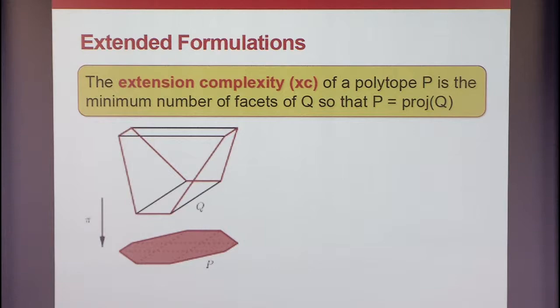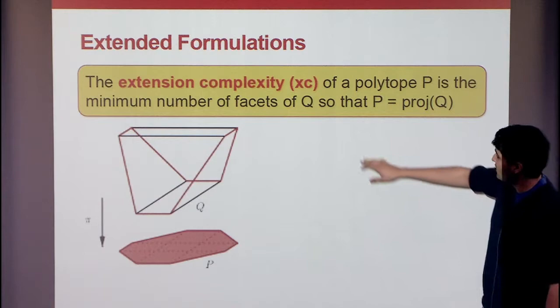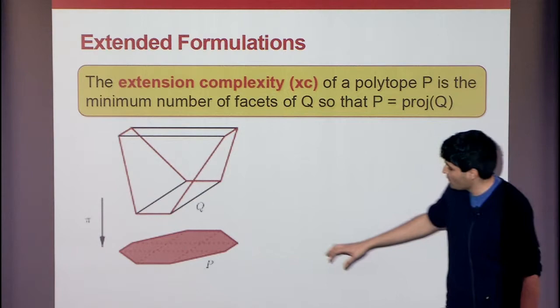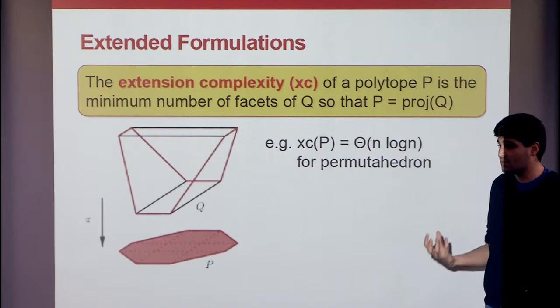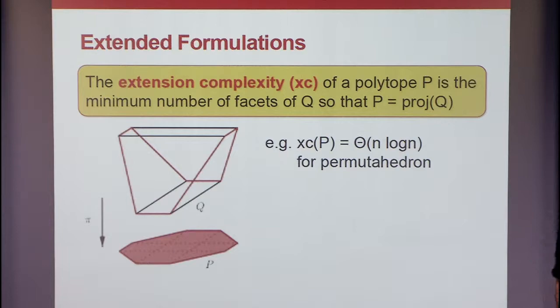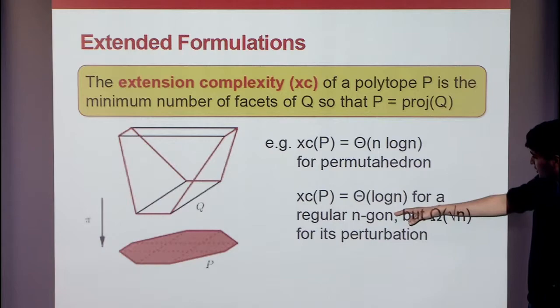This is the idea of an extended formulation more generally. The extension complexity of a polytope is the minimum number of inequalities needed on a higher dimensional polytope Q such that the original polytope is the projection of Q. We've seen one example: the permutahedron has exponentially many facets, but extension complexity n-squared. It turns out you can actually do n log n, and that connection is through the AKS sorting network — a fun result of Gohmann's.